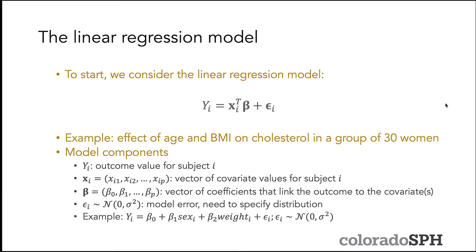From last semester, if you took 6611, you should be familiar with the linear regression model. The linear regression model looks like this: yi equals xi-transpose times beta plus some epsilon-i, which are your error terms. We're going to look at this in the context of an example where the outcome is serum cholesterol levels and we want to see how age and BMI influence that outcome. Let's look one by one at each of these model components.